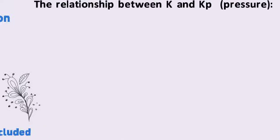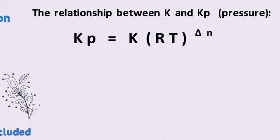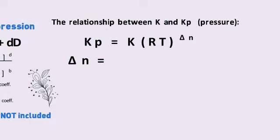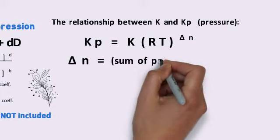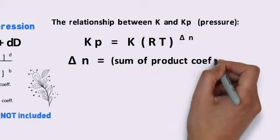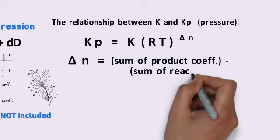There is a relationship between the equilibrium constant and Kp, pressure and a gas. And that is expressed as follows. Kp equals K times RT to the delta N. And delta N is equal to the sum of the product coefficient minus the sum of the reactant coefficient. Please note that minus sign there.